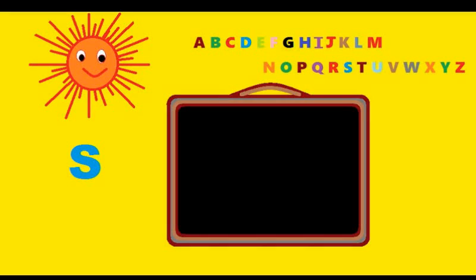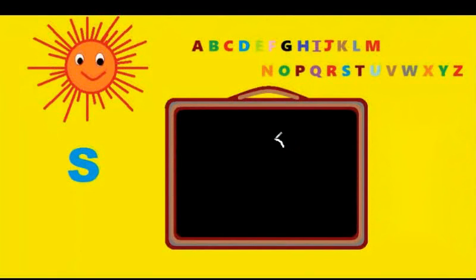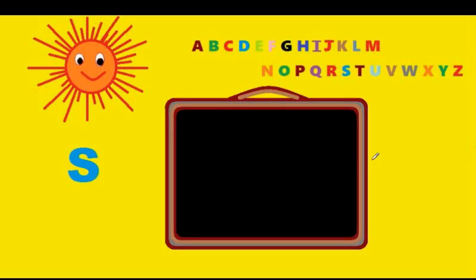Now S. S just goes like a snake — round the corner, round the corner the other way. Let's watch it again: S goes like this, then comes down like that. That's S. S is for star.